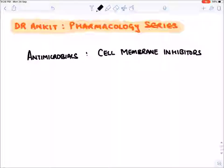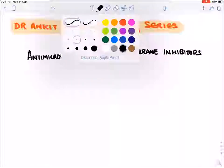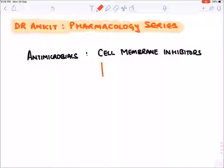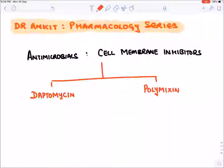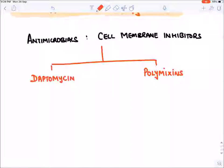Let's start with antimicrobials which affect the cell membrane of a bacteria. For cell membrane inhibitors, we have two types of drugs only: the first drug is daptomycin and the second is polymyxins. These are the two classes of drugs which affect the cell membrane of a bacteria, and remember they both are bactericidal drugs.